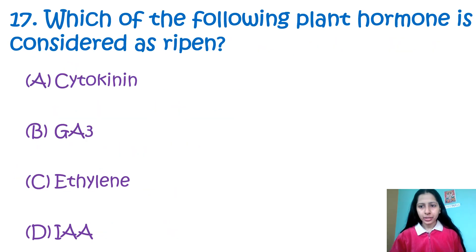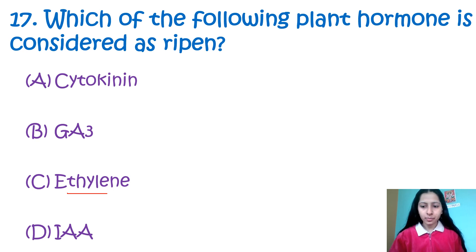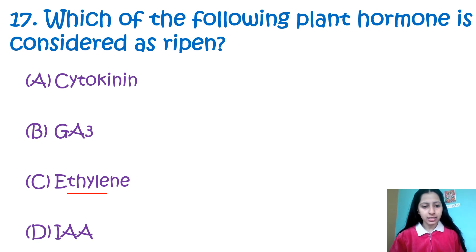Question 17: Which of the following plant hormones is considered a ripening agent? Option A: cytokinin, B: GA3 (gibberellic acid), C: ethylene, D: IAA. Ethylene gas is also known as the ripening gas — it helps fruits to ripen by enhancing the respiration rate during ripening. Gibberellic acid acts as a plant growth regulator that modulates various physiological, biological, and molecular processes in plants. So the correct option is C, ethylene.